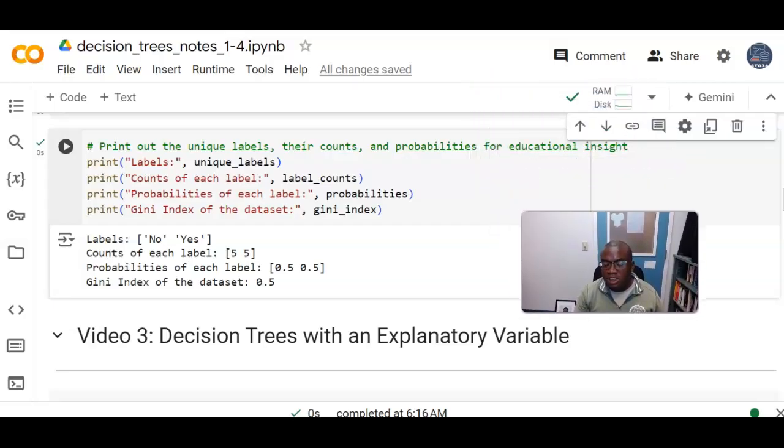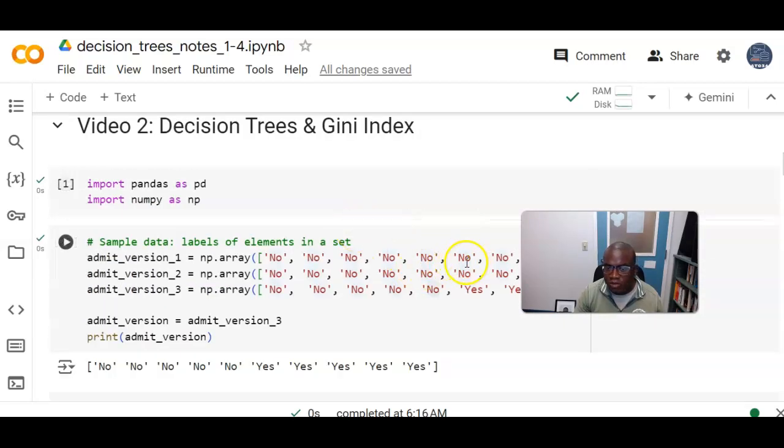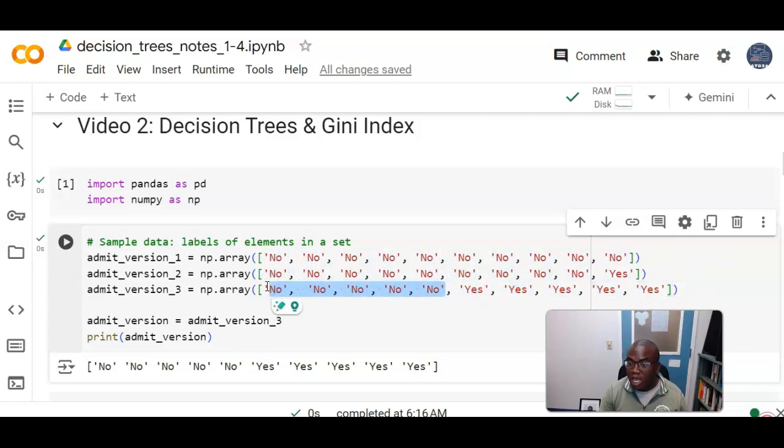All right, so when it comes to decision trees, we're going to be able to now include an explanatory variable. So you may say, oh, Dr. Williams, why did you not include them before? How does that connect to the Gini index? Why is the Gini index used without an explanatory variable? Well, the thing is, with these yes and those, there can be some information on, let's say, for example, the third group, why these are yeses, why these are yeses, and why these are noes. And that why can be explained by the explanatory variable.